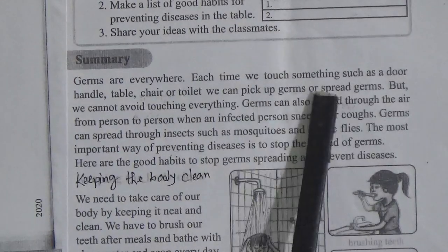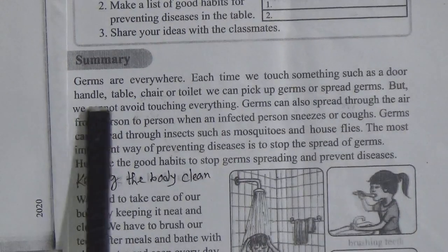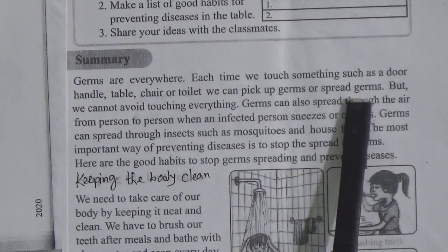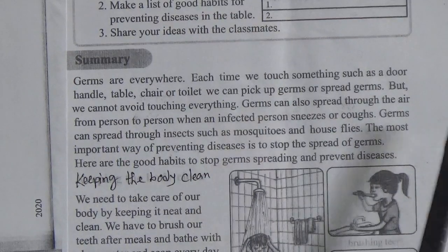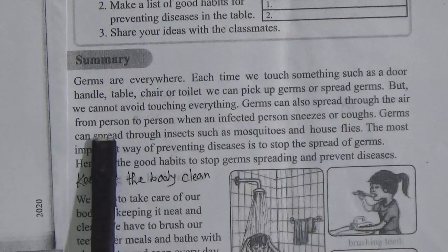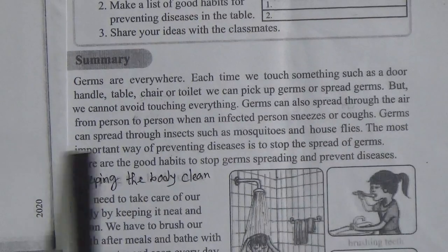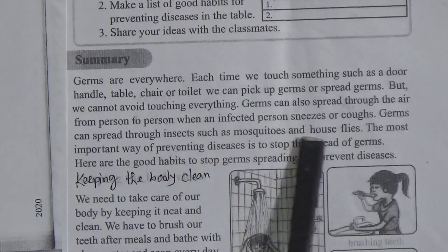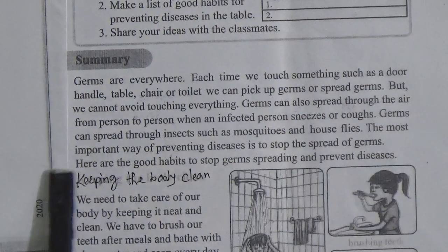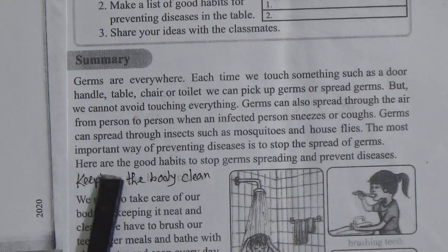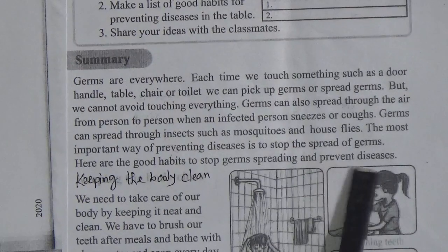Prevention of diseases. Germs are everywhere. Germs can also spread through the air from person to person when an infected person sneezes or coughs. Germs can spread through insects such as mosquitoes and house flies. The most important way of preventing diseases is to stop the spread of germs. Here are good habits to stop germs spreading and prevent diseases.